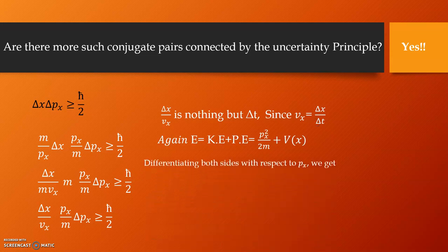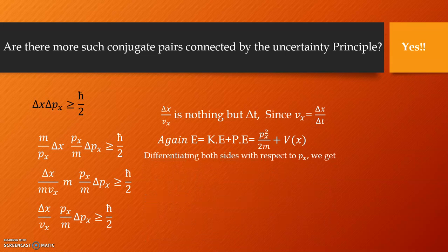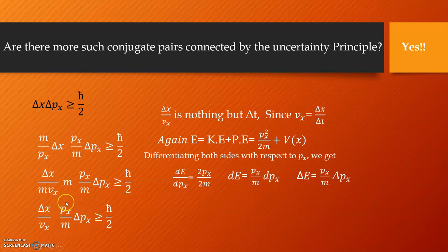Now, if we differentiate this equation with respect to px, what we get is dE by dpx is equal to px by m. If I take this dpx from left-hand side to the right-hand side, I have a new equation dE is equal to px by m dpx, which is simply equivalent to delta E is equal to px by m into delta px. If you look into this quantity, this quantity is the same as the quantity what we have here in our earlier equation.